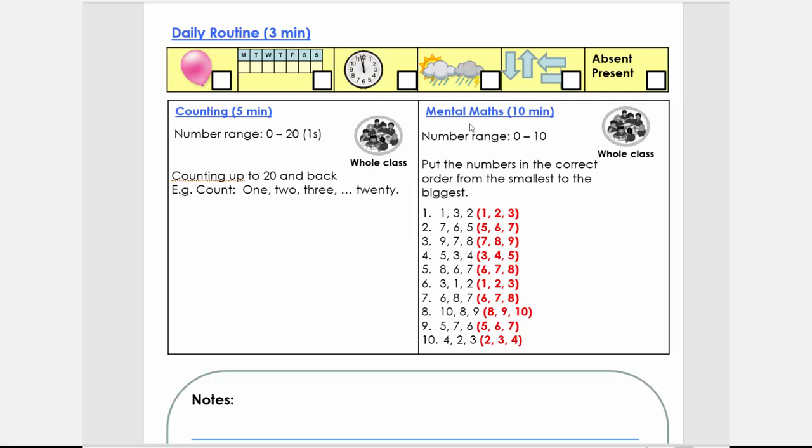Welcome back. So the mental mathematics, we will ask 10 questions each day. Now the red part is always the answer, so don't let the child or the children in the class see this. So the first activity that we're going to do is we're going to work between the number range 0 and 10, so it's revision of the previous term.